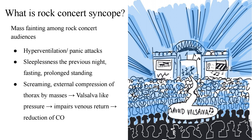Here is an interesting phenomenon called rock concert syncope. Many articles were published based on mass-fainting episodes among rock concert audiences. The mechanisms include: hyperventilation or panic attacks; sleeplessness the previous night, fasting, and prolonged standing in large queues; and a lot of screaming with external compression of the thorax by the crowd, leading to a Valsalva-like pressure that impaired venous return and reduced cardiac output. All of these factors played a role in causing mass fainting during rock concerts.